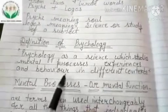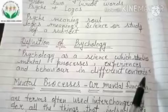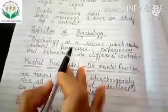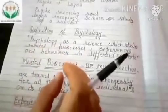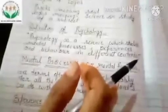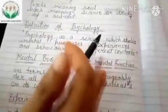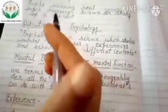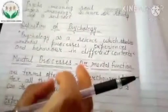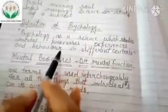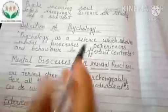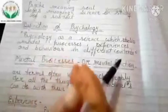Psychology is a science which studies mental processes, experiences, and behavior in different contexts. Mental processes include thinking, perception, memory, etc. Experience and behavior means that a person's mental processes shape the experiences they gain according to their behavior. Psychology is used to assist all biological and social sciences.